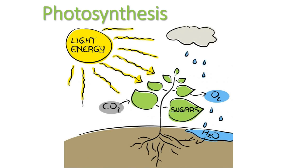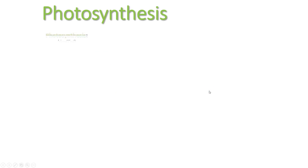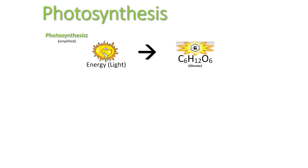Photosynthesis, as I mentioned — light, carbon dioxide, and water go in, and then sugars and oxygen are produced. Here's what you need to know, the basics of it. Simplified photosynthesis: light gets turned into glucose. That's why it needs the light — so it can make the glucose.